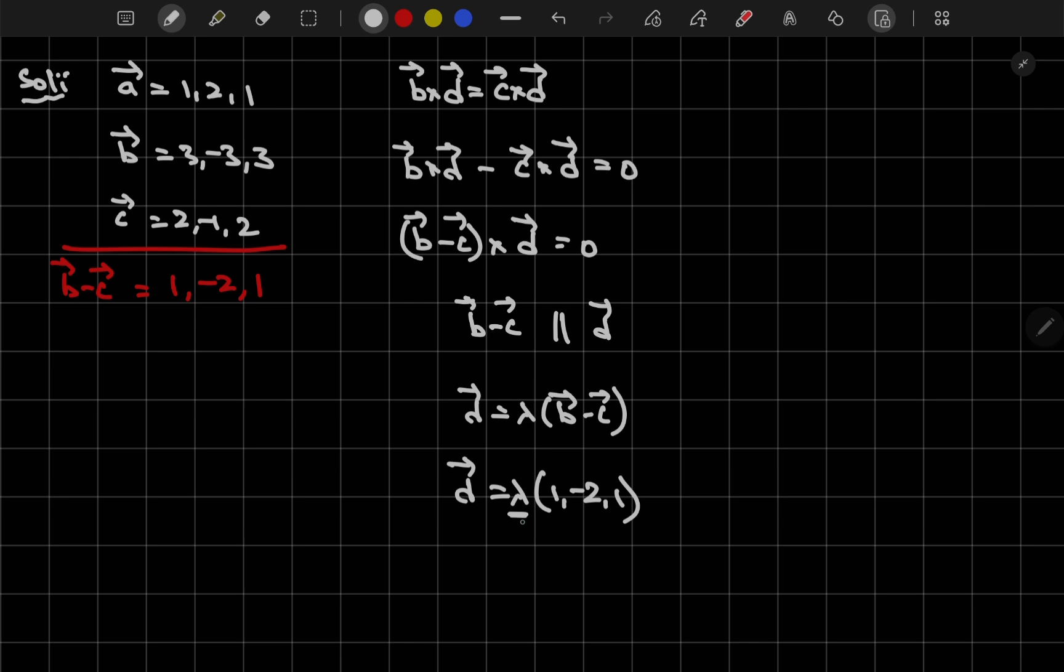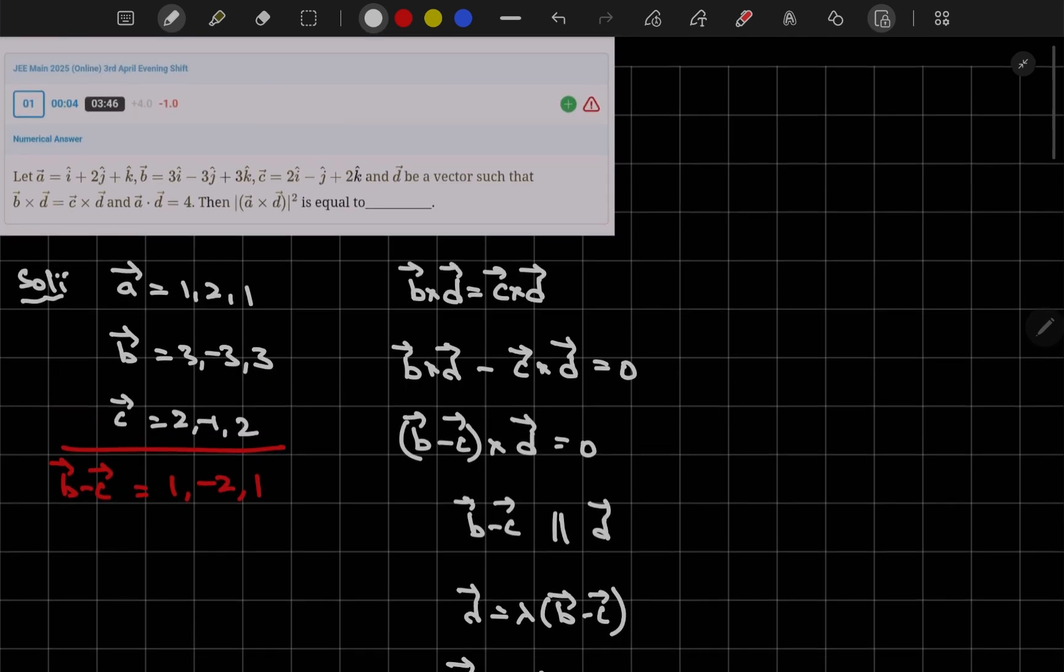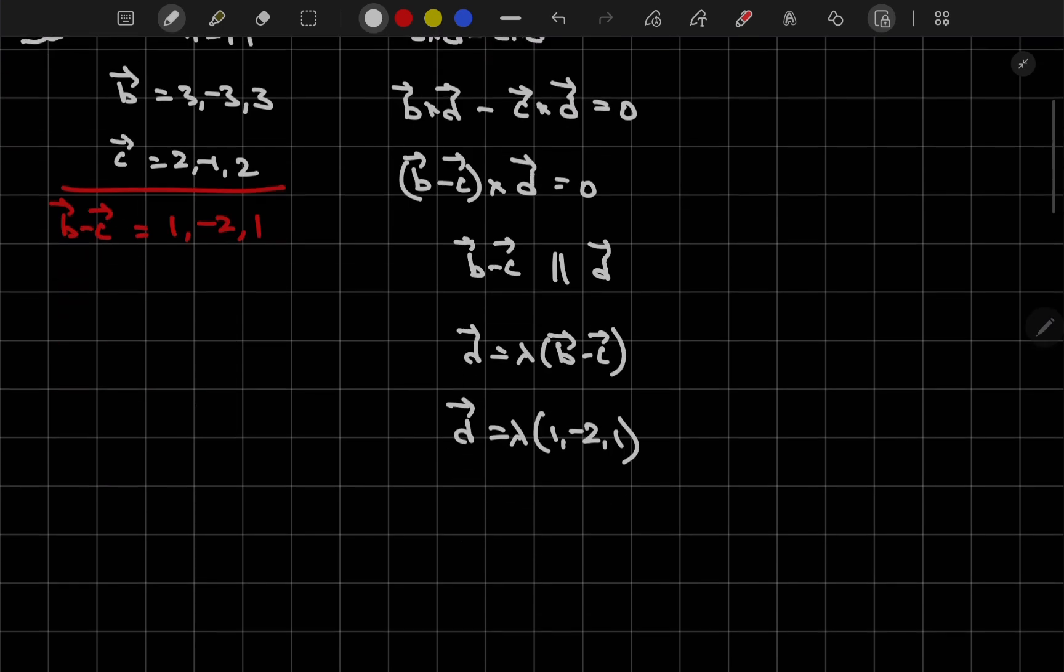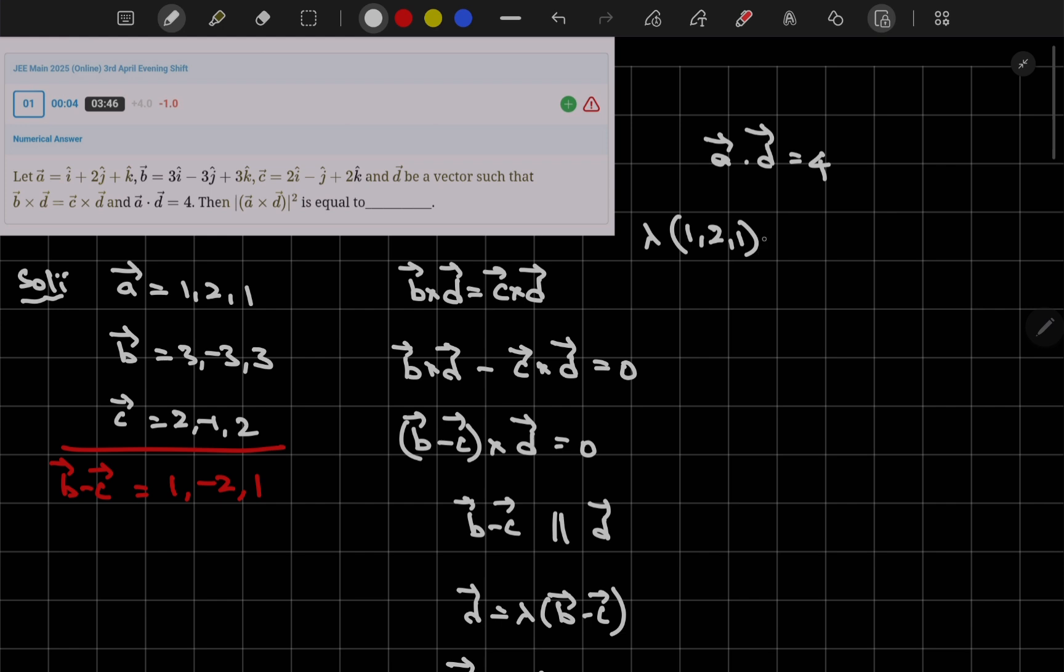So if I found lambda value, I will get D vector. How to find lambda value now? Here A dot D value is 4. From here you can find lambda value. So let me take A dot D value as 4 where A vector is 1 comma 2 comma 1 and lambda times of B minus C. B minus C value is 1 minus 2, 1. This is a dot product. So lambda times of 1 into 1, 1 minus 4 and again plus 1 value will be equal to 4. So lambda value is minus 2.